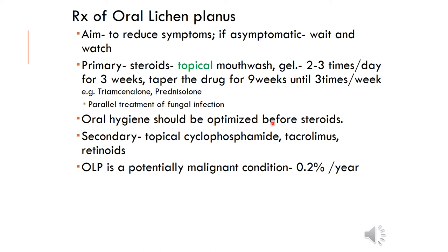Oral hygiene should be optimized before starting steroids — ideally a scaling is done first, though if the patient is very symptomatic these may be done simultaneously. Secondary-phase treatment, if steroids are no longer effective, includes topical cyclophosphamide, tacrolimus, and retinoids, provided the patient is medically fit. Oral lichen planus has a malignant transformation rate of 0.2%, so it is important to keep symptoms under control, monitor the disease long-term, and take a biopsy if any changes are observed.